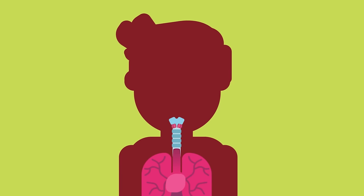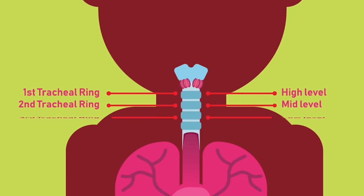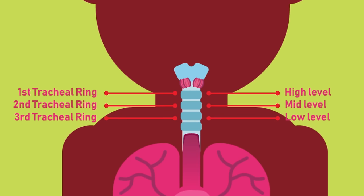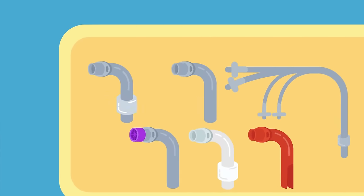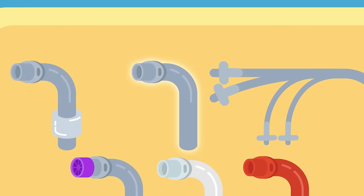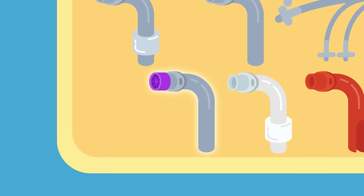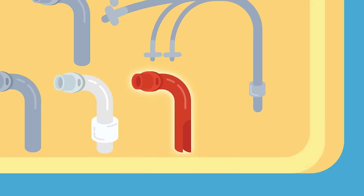Tracheostomy can also be classified as high, mid, or low depending on the level at which it is inserted into the trachea. Different varieties of tracheostomy tubes include cuffed, non-cuffed, double lumen tubes, tubes with speaking valves, metallic tubes, and so on.